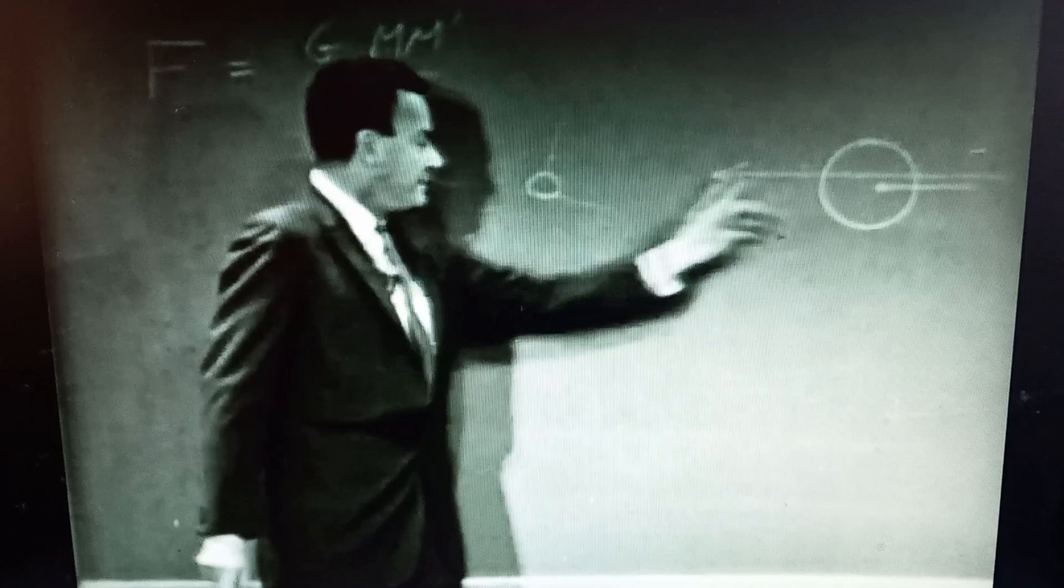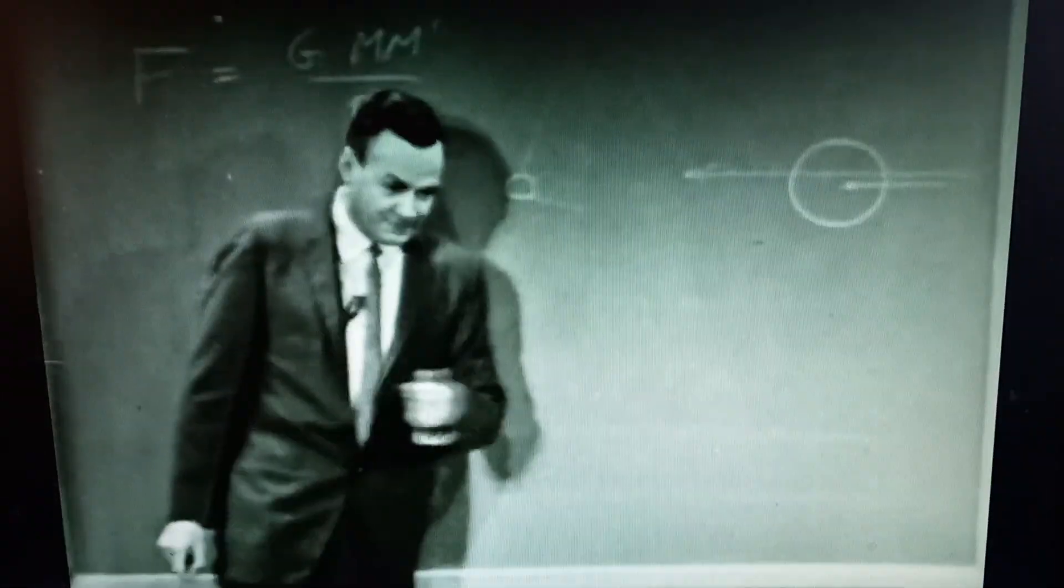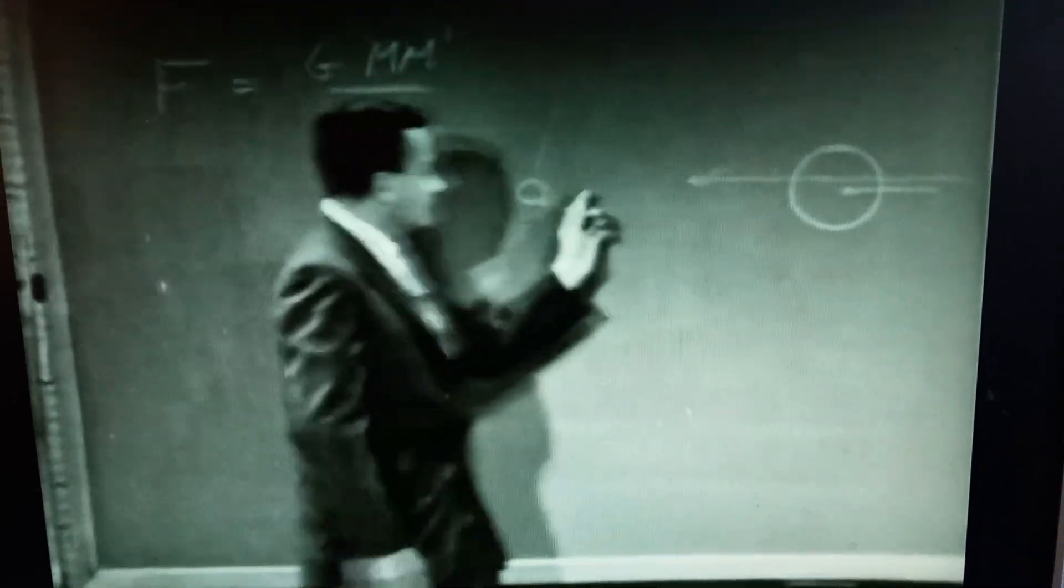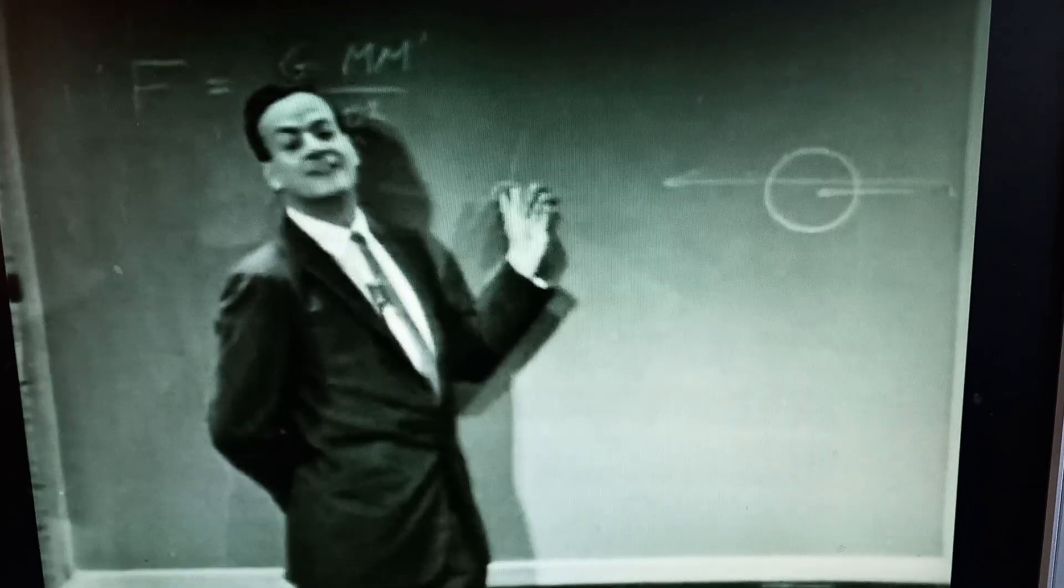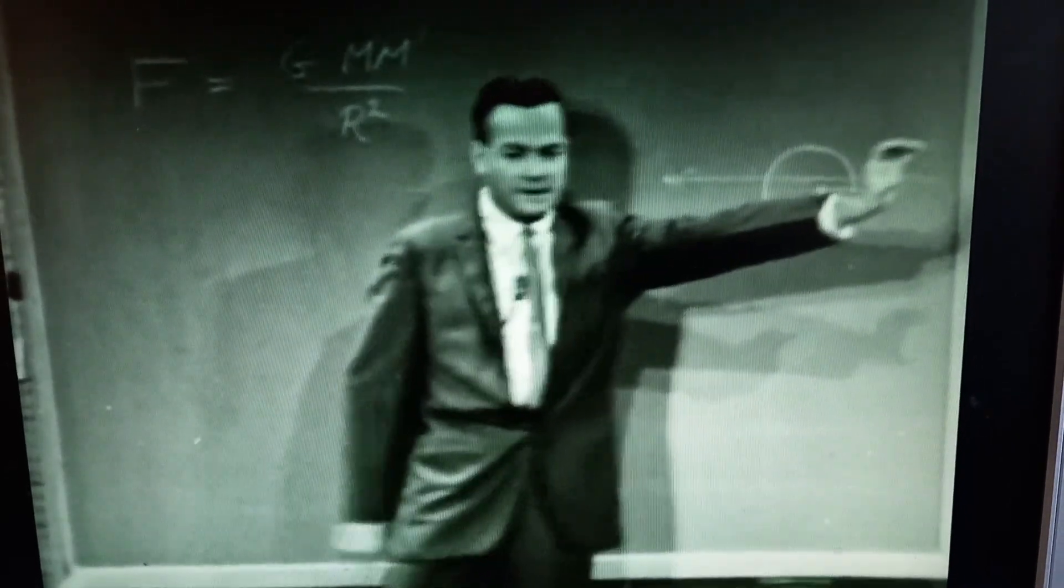Therefore the number that are coming from this direction towards the earth is less than the number that are coming from the other side, because here they have no opposition from the front there.